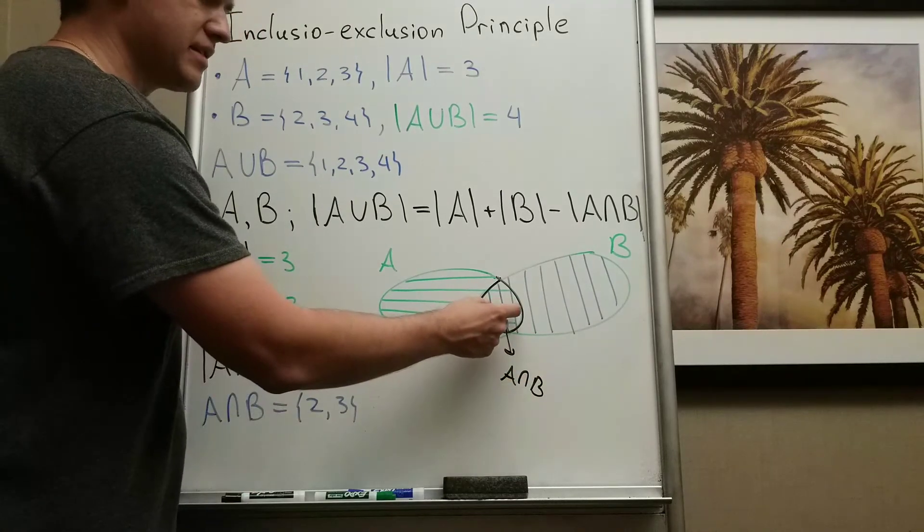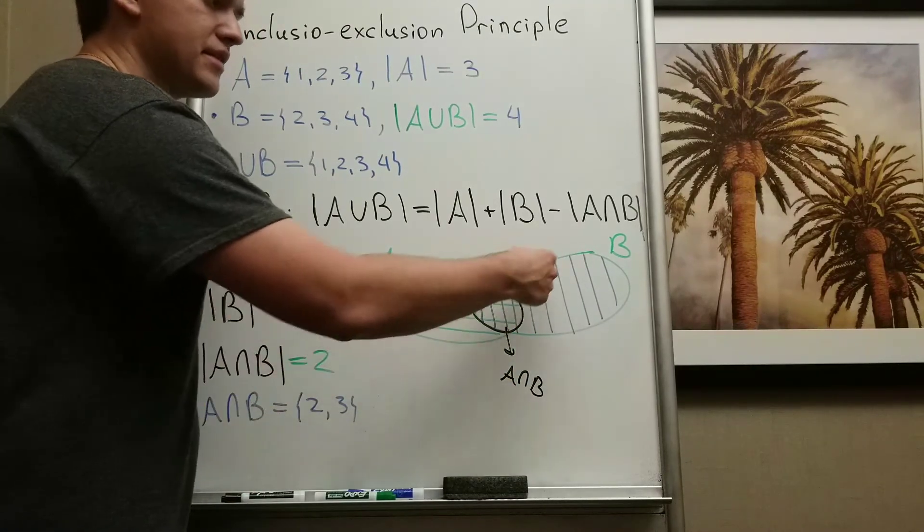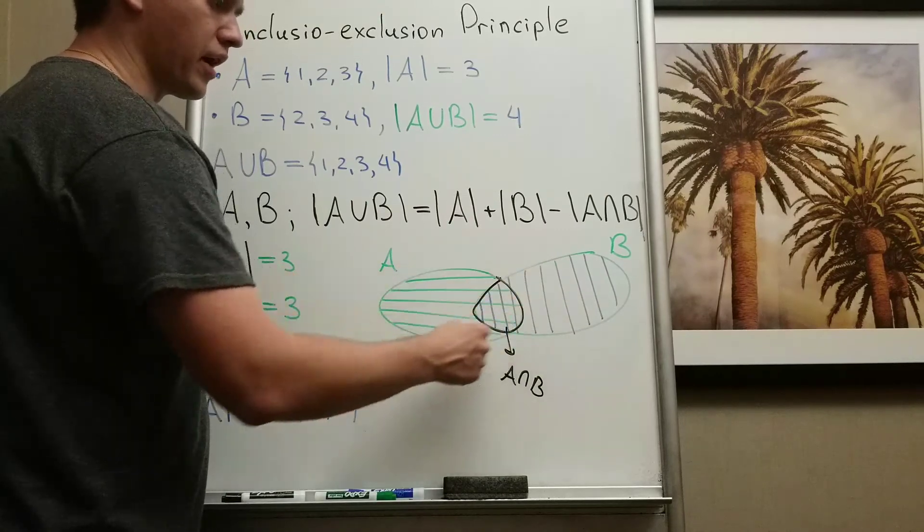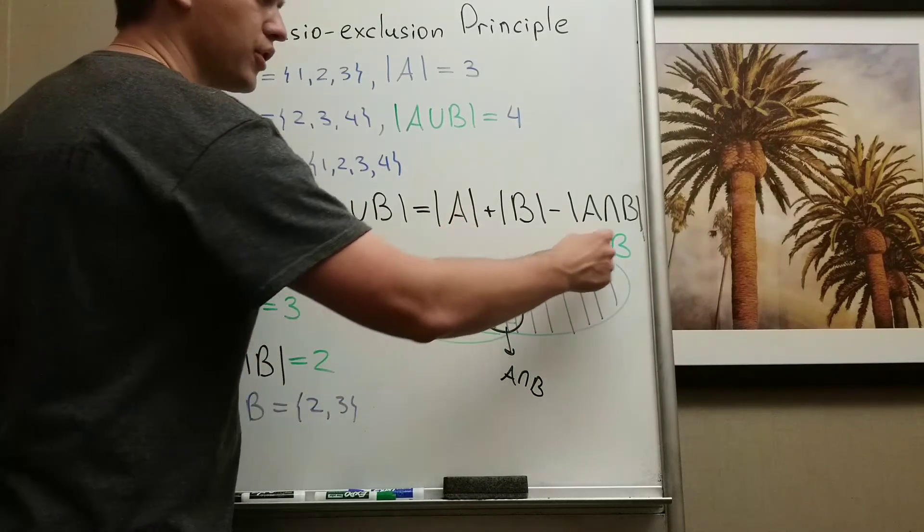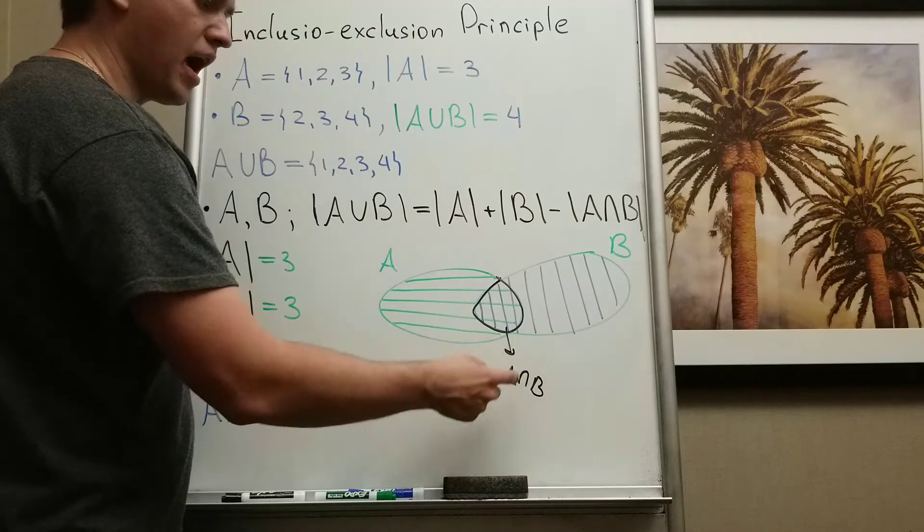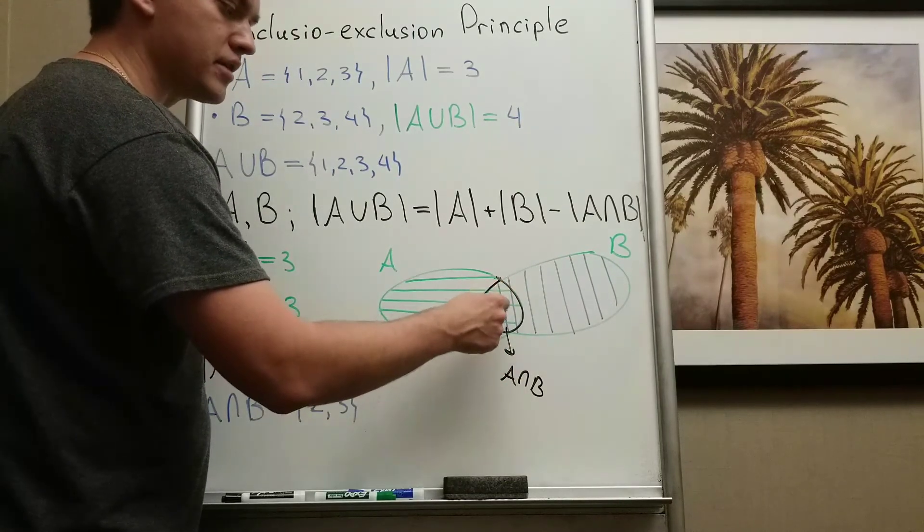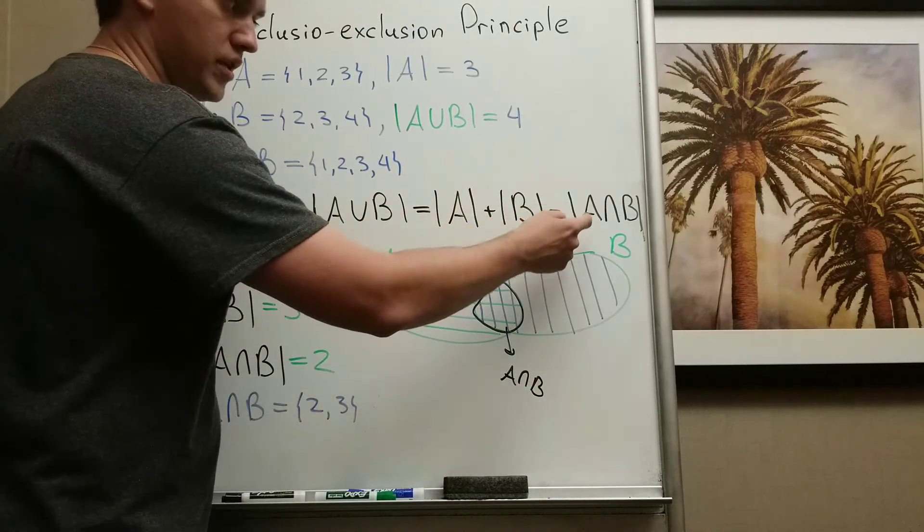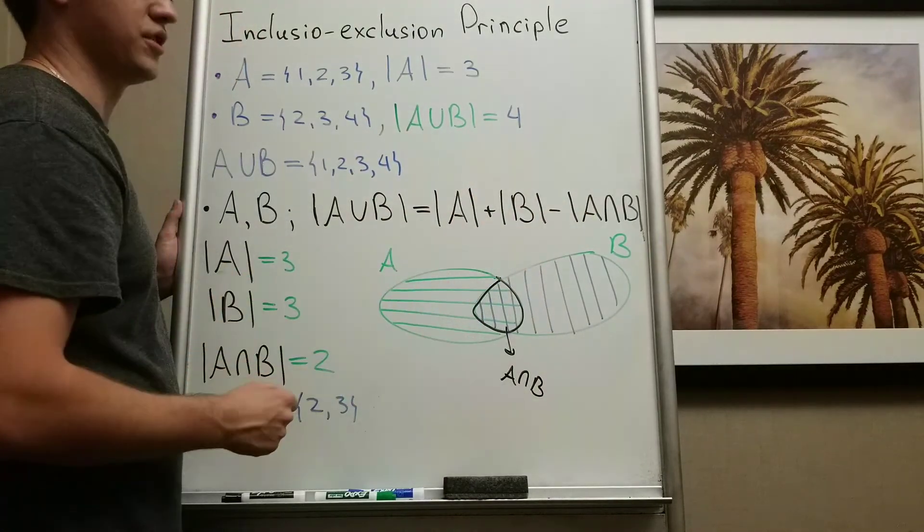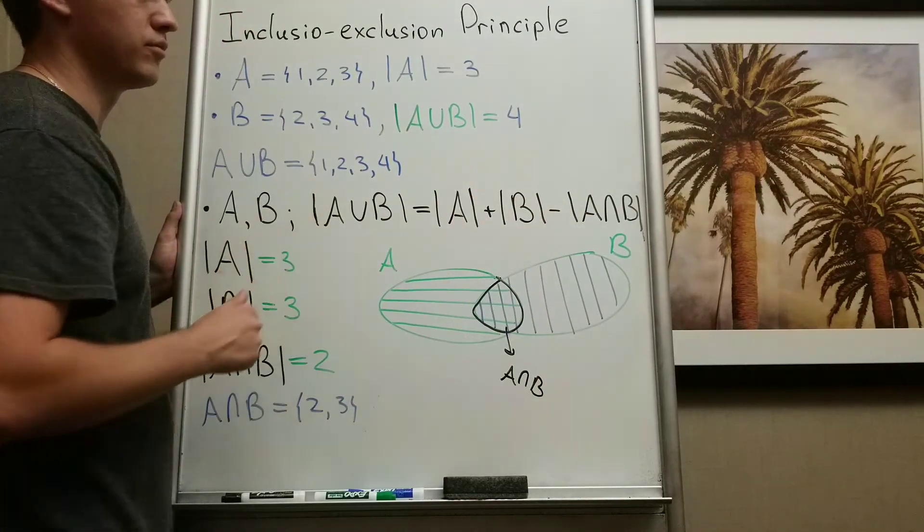Why? Because these elements lie inside A and inside B. So when you're counting elements of A, and you're also counting the elements of B, and if their intersection is not empty, you're counting these elements two times. So that's why you need to subtract A intersection B, in order not to count them two times.